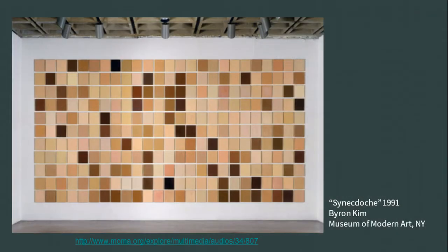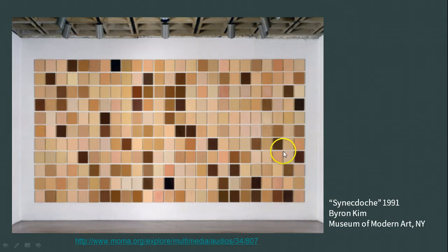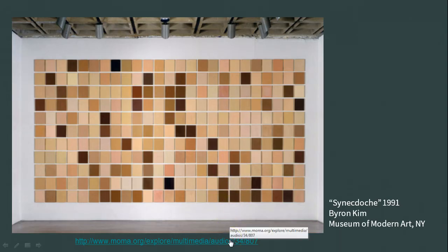Before we decide on what genotype determines light skin color based on anecdotal evidence, let's think about a much larger sample size. This well-known work of art by Byron Kim shows the diversity of human skin color tones. Each panel is 10 inches by 8 inches, and the painting fills an entire wall. The colors on the panels represent 275 different skin tones — people that Kim met. The title of his painting, Synecdoche, means a part standing for the whole, so the panels represent skin tones of mankind.